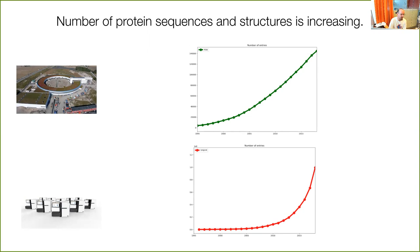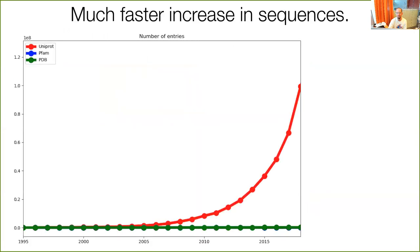Today there are tens or even hundreds of millions of protein sequences, and only a few hundred thousand protein structures are known — depending somewhat on how you reduce for very similar sequences and structures. The sequences are increasing much faster in an exponential that has been going on for a long time. So if we can use the sequence data to get structure, we would gain a lot.